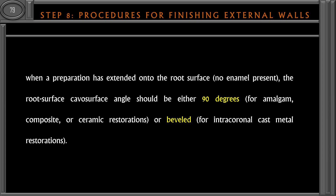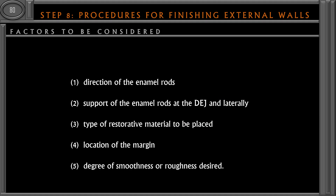When a preparation has extended to the root surface, regardless of the type of restorative material — amalgam, composite, or ceramic — it should have a 90-degree joint. A bevel is placed for composite only where there is enamel. Since there is no enamel on the root surface, bevel should not be placed even for a composite restoration extending subgingivally. A bevel can be placed for subgingival restoration in the case of intra-coronal cast metal restoration like a cast gold restoration.